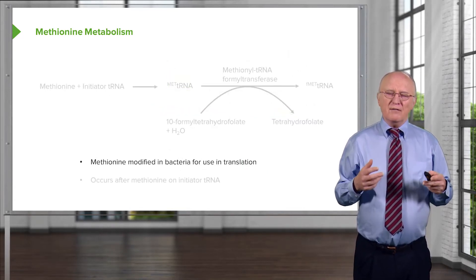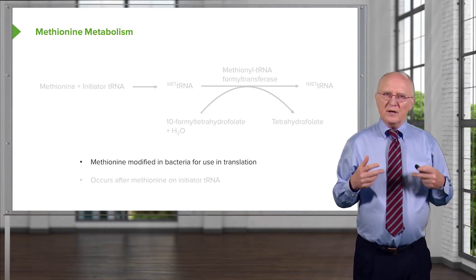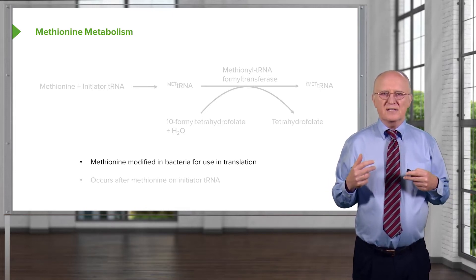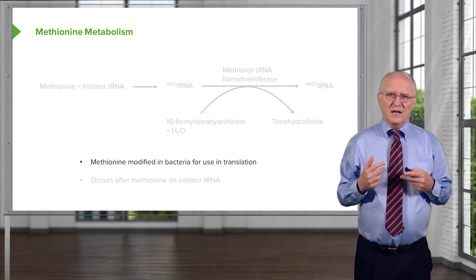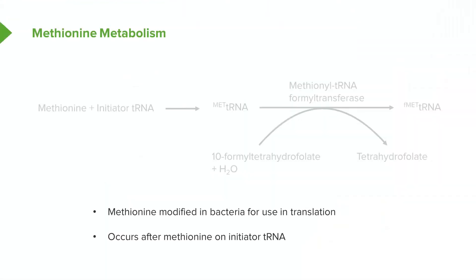Methionine is modified in bacteria before it is put into making proteins. In bacterial translation, the very first amino acid that makes it into proteins is not methionine but a modified form of it, known as formylmethionine. Like the synthesis of selenocysteine, formylmethionine is made by modifying a methionine that is on a transfer RNA, as shown in this set of reactions.